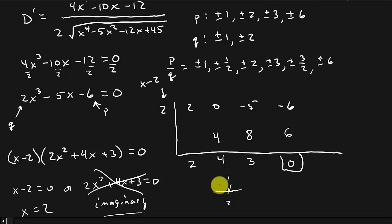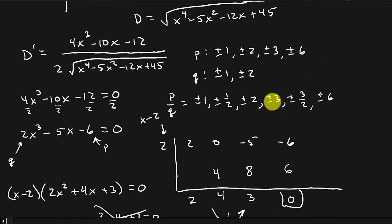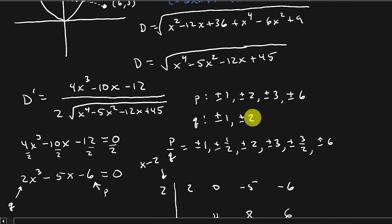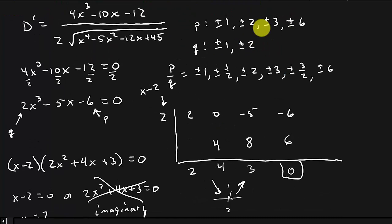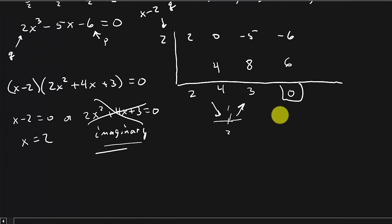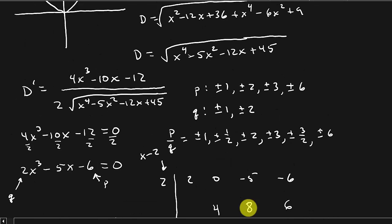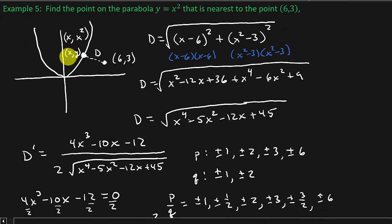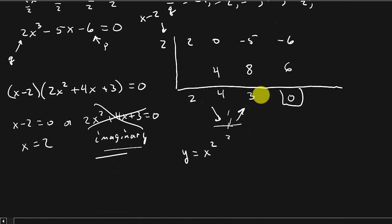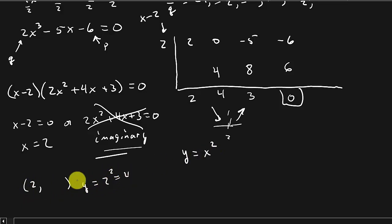Testing the number line around x equals 2 shows it's decreasing then increasing, confirming a relative minimum — which is what we want, since we're looking for the shortest distance. Our function is y equals x squared, so the x-coordinate is 2 and the y-coordinate is 2 squared equals 4. So the answer is the point (2, 4) on the parabola is nearest to the point (6, 3).